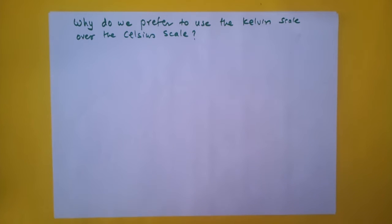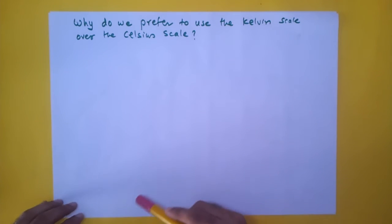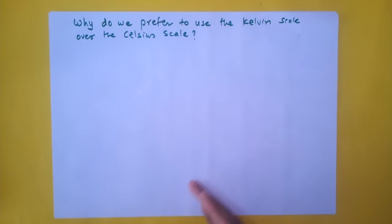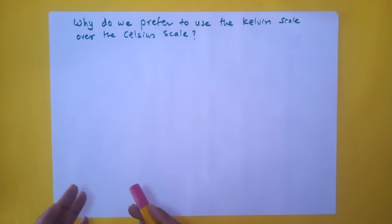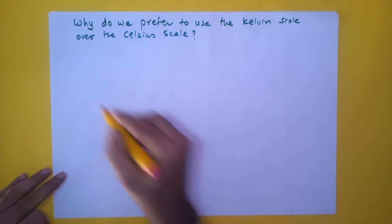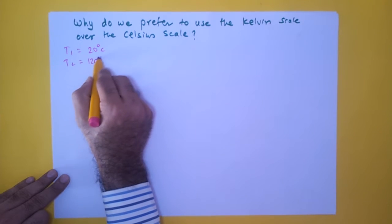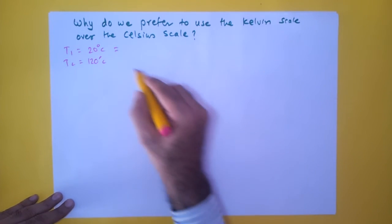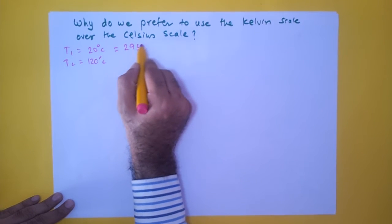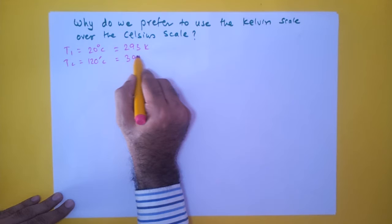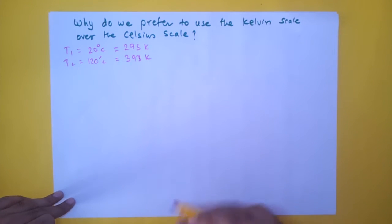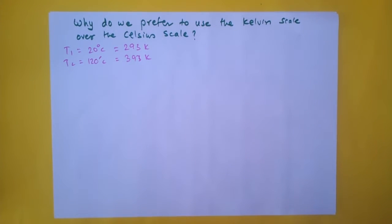If you're studying thermodynamics, this is a question you must have in mind: when dealing with questions and using different laws, why do we prefer to use the Kelvin scale and not the Celsius scale? Why do we convert temperature from Celsius to Kelvin? For example, if T1 is 20°C and T2 is 120°C, we convert to Kelvin by adding 273, giving 293 K and 393 K. What is it about the Kelvin scale that makes us use it in thermodynamics?